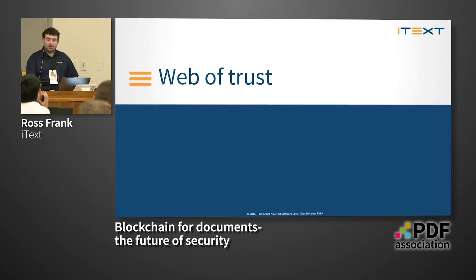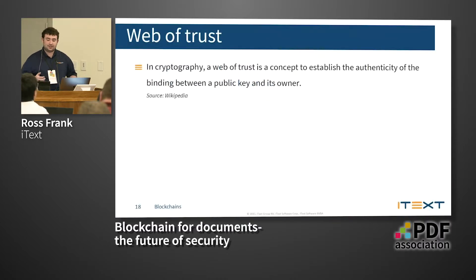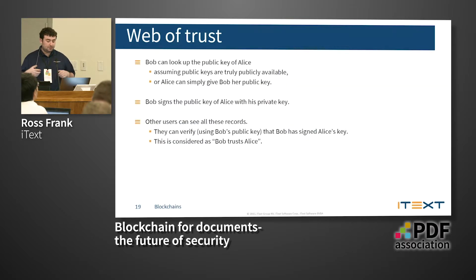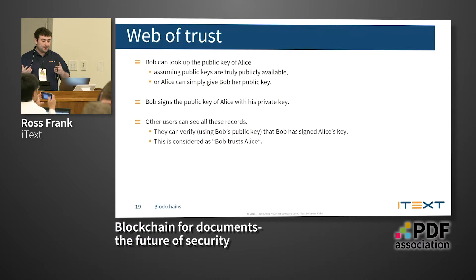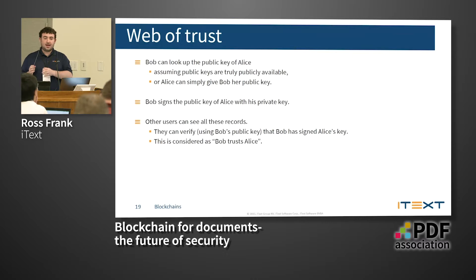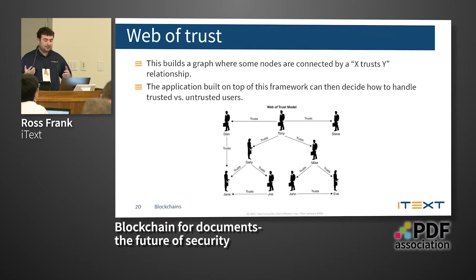Another key concept of blockchain is the web of trust. In cryptography, a web of trust establishes the authenticity binding between a public key and its owner — because if you send a document to Bob to be signed, how do you know it's actually Bob's key? Alice can look up Bob's public key, or Alice can give her key directly. To create the web of trust, Bob can confirm a public key belongs to Alice and sign it with his private key to say 'I trust Alice.' Now anyone with Bob's public key can confirm Alice's identity without actually talking to Alice. This builds a graph where nodes are connected by trusting relationships.